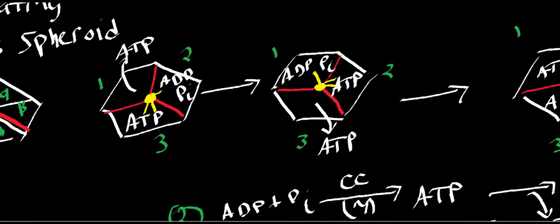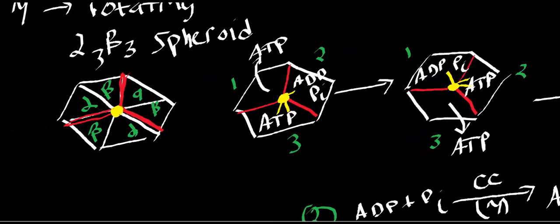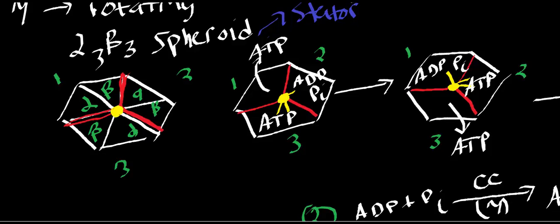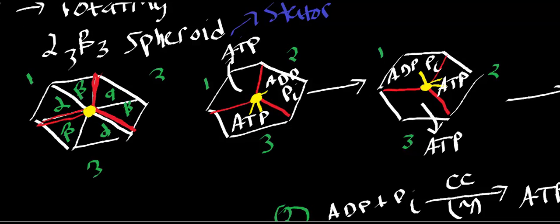The gamma shaft is rotating relative to the alpha3-beta3 spheroid. The alpha3-beta3 spheroid is not moving at all — it is part of the stator. The gamma shaft is what's moving — it is part of the rotor. As the gamma shaft rotates against the spheroid subunits, depending on which part of the gamma shaft faces which part of the spheroid, it changes the conformation and thus the activity of that subunit.